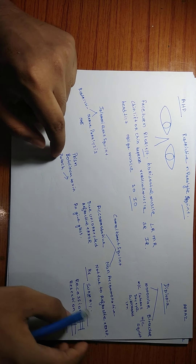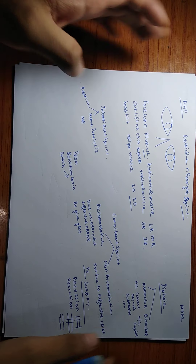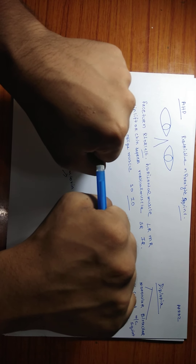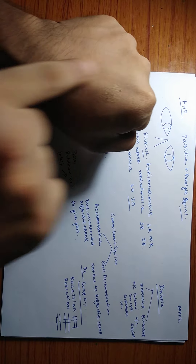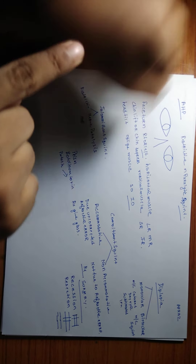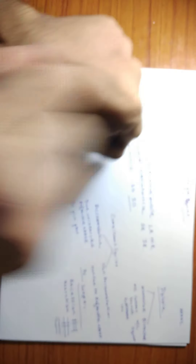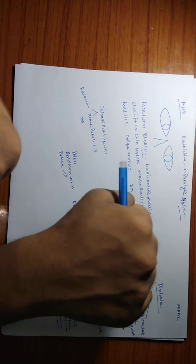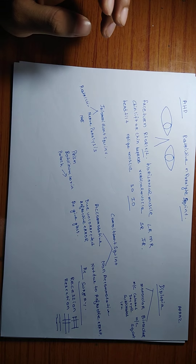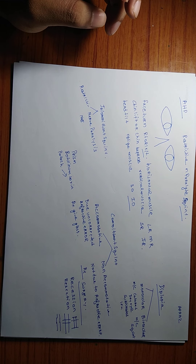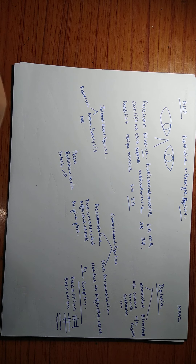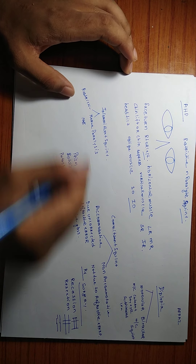If we cover the squint eye, the abnormal image from that eye is eliminated and the patient sees normally again. In simple words, if both images are not formed on the fovea, there will be diplopia. So we patch one eye to remove the second image — that is the treatment principle for diplopia with patching.